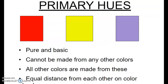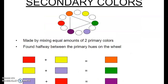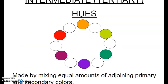Primary colors are pure and basic. All other colors are created using these primary colors. They're equal distance from each other on the color wheel and cannot be made from any other colors. When we combine two primary colors we get a secondary color such as orange, green, or violet, found directly in between the two primary colors. Tertiary colors are made by mixing equal amounts of adjoining primary and secondary colors.